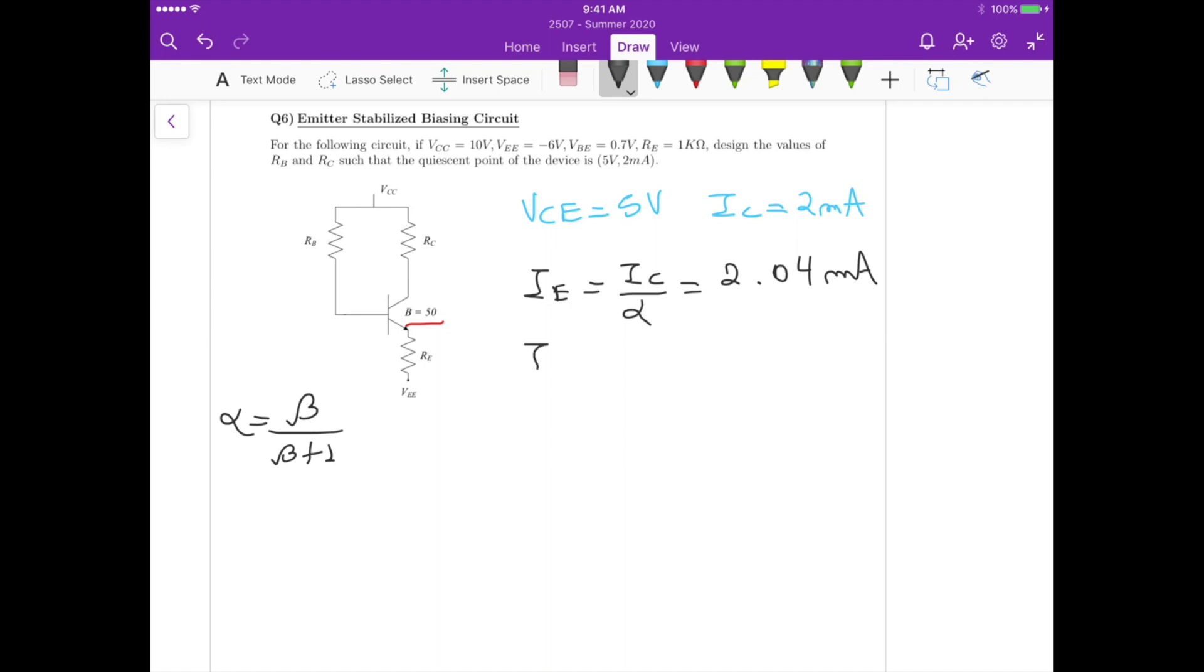And we also know that the base current, we could take the difference between the emitter and the collector current, which gives us exactly 40 microampere. So we know all the currents that we have here.